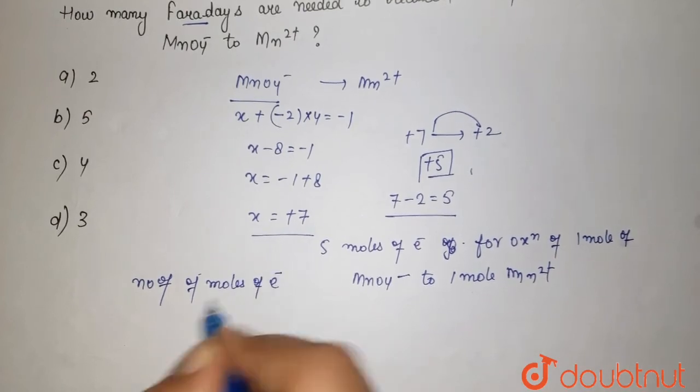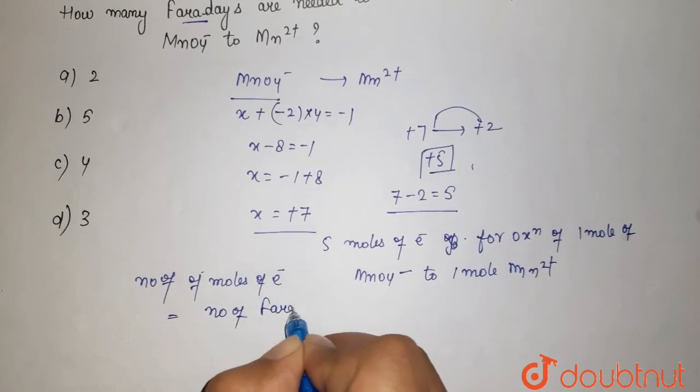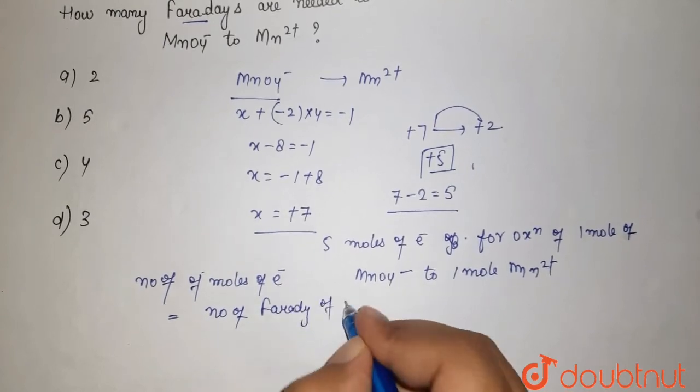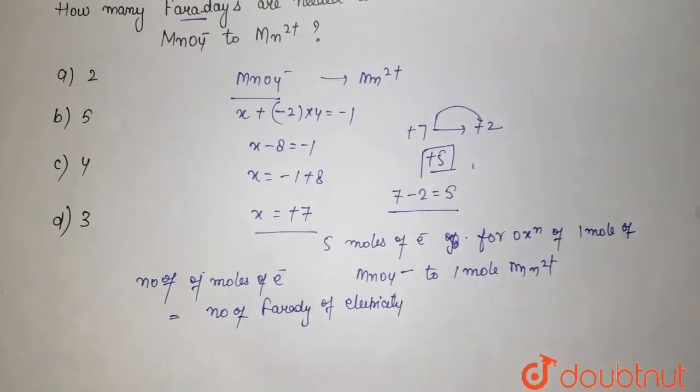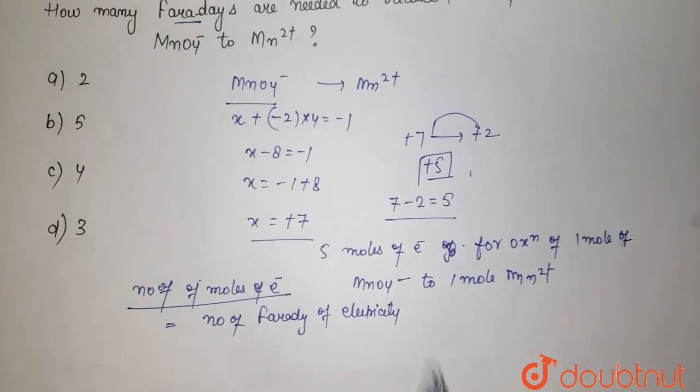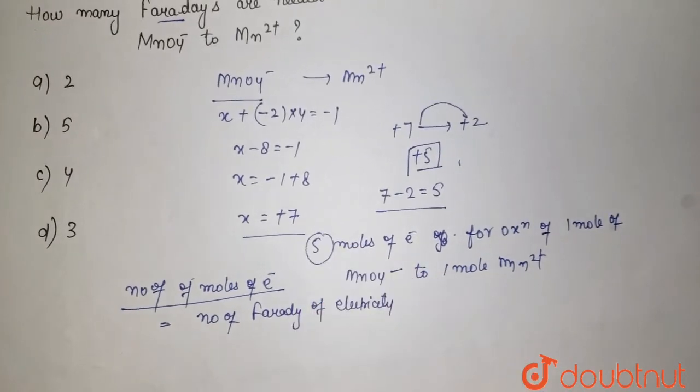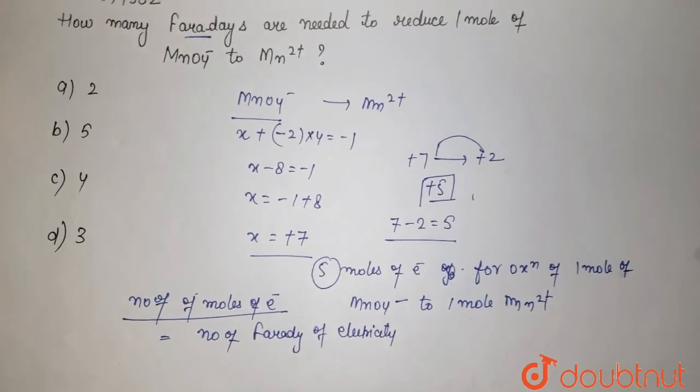The number of moles of electrons is equal to the number of Faradays of electricity required. So we get to know that 5 moles of electrons, or 5 Faradays, are needed to reduce 1 mole of MnO4- to 1 mole of Mn2+.